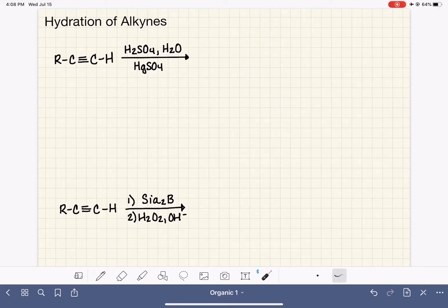There are two different ways that we can hydrate or add a water molecule to an alkyne. The first one that we're going to look at uses reagents that resemble the alkoxymercuration, demercuration of an alkene, and also the acid-catalyzed hydration of an alkene.